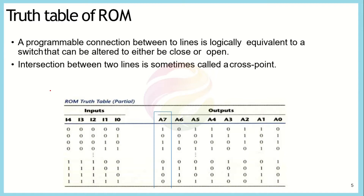To represent these 256 connections, we generally represent the functionality of ROM in the form of a truth table. Here we are representing the truth table for our ROM — the same 32 × 8 ROM example. For the 32 × 8 ROM we require five-bit address lines, giving 32 combinations. For simplicity we have written only the first four and last four combinations; the rest follow the same pattern.